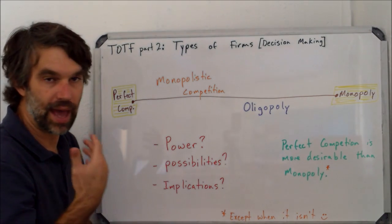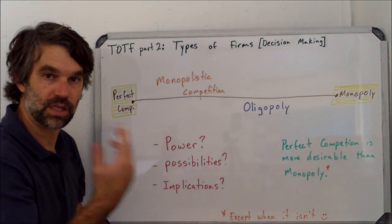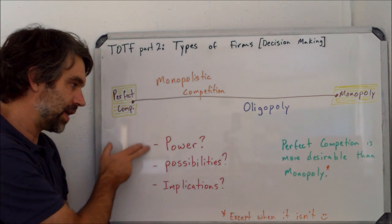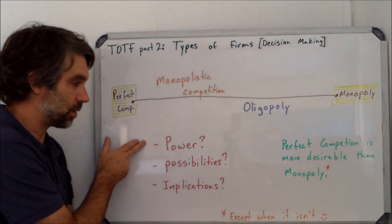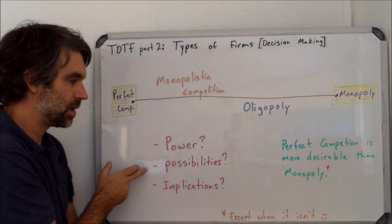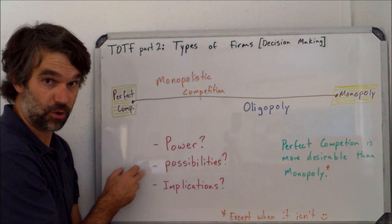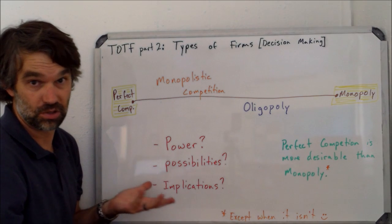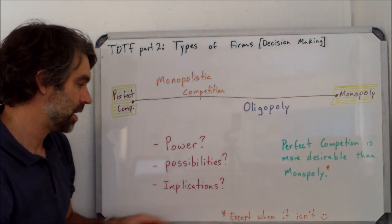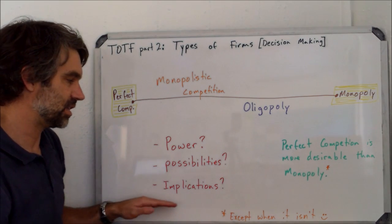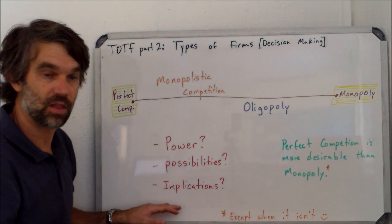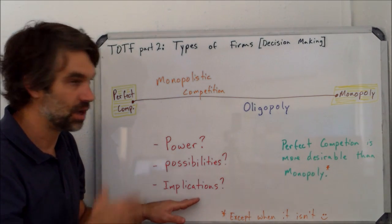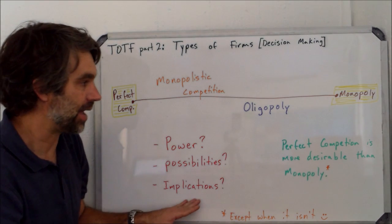Primarily, we're looking at how much power each firm has. What are the possibilities for a firm? Can it control the market, or does it just have to do what the market tells it to? And then what does this mean for other groups outside of the firm — what does it mean for the government, for consumers, foreign producers, things like that?